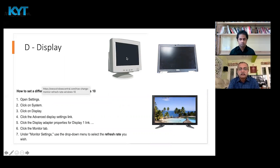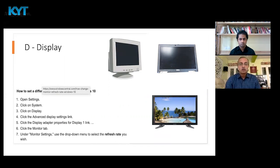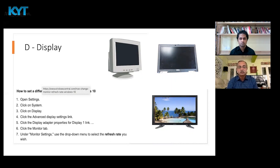D stands for Display. The oldest is the cathode ray tube — the CRT monitor — which is really bad for the eyes. From there we went to LED screens, which are definitely superior, and now we have plasma screens, which are even better. You need to improve the flicker rate, resolution, and color pixelation — everything has to be of higher quality. You can find adequate information on YouTube or Google about what kind of flicker rate, pixelation, or resolution you require for your eyes.